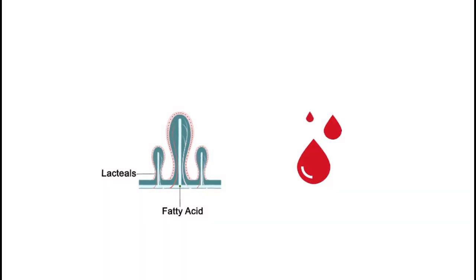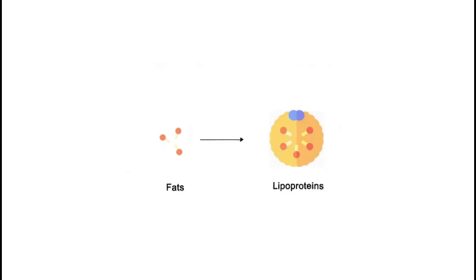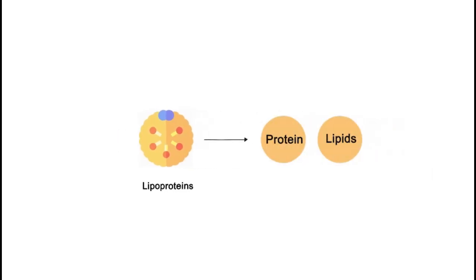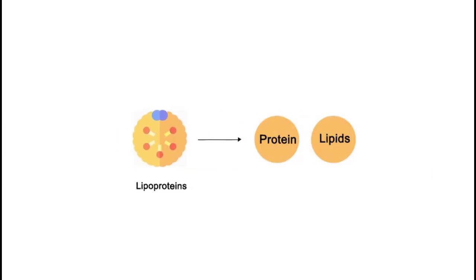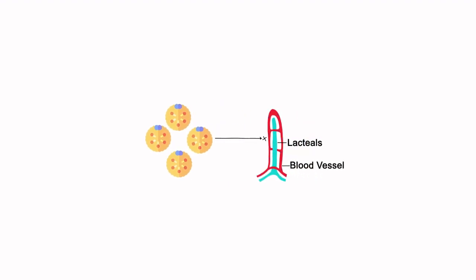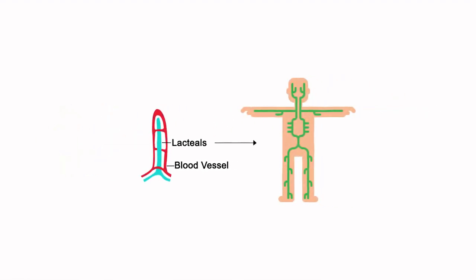Fats travel to the lacteals because they are hydrophobic. Blood is hydrophilic, so adding fats to the blood would cause them to clump together. To prevent this, they enter lacteals, which move them to the lymphatic system. Broken-down fats are first transformed into lipoproteins — complexes made from both proteins and lipids that are hydrophilic due to their specific structure. These molecules are too large to enter the blood capillaries, so they enter the lacteals instead, then move through the lymphatic system before finally entering the blood via the thoracic duct.